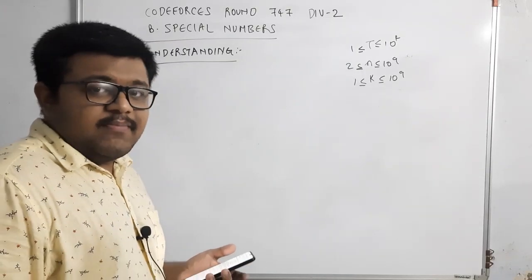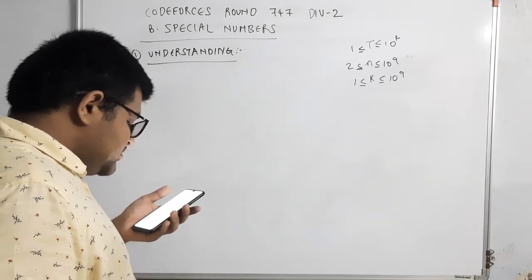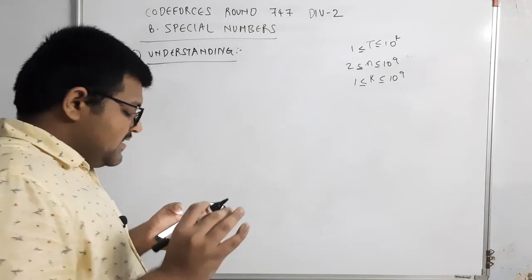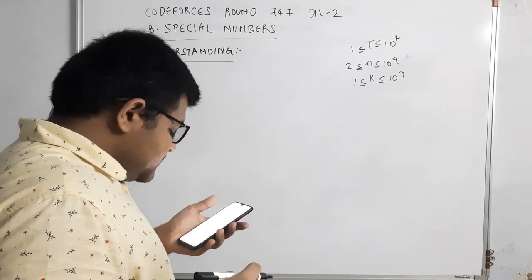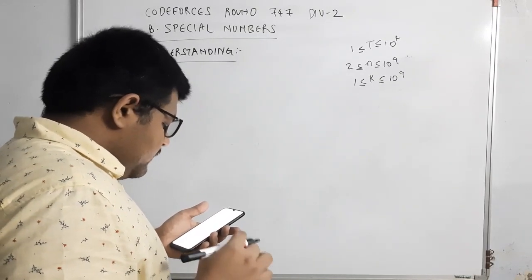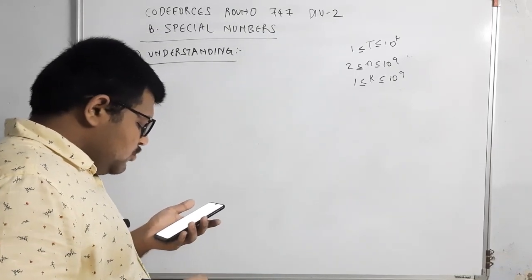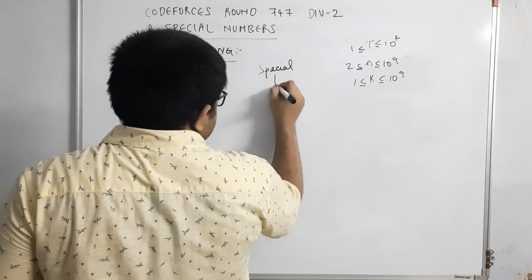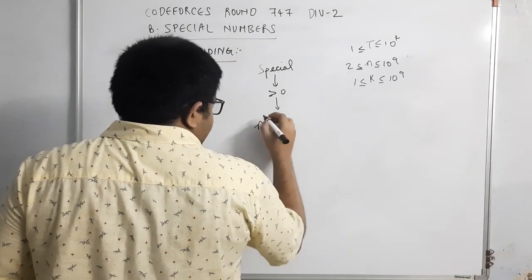Let us start by understanding the question: Special Numbers. Theophanis really liked sequences of positive integers, so his teacher gave him a problem about a sequence that consists of only special numbers. A positive number is called special if it can be written as a sum of different non-negative powers of n. For example, when n=4, the number 17 is special because it can be written as 4 to the power 0 plus 4 to the power 2, but 9 is not.